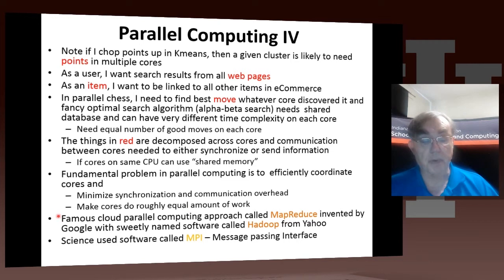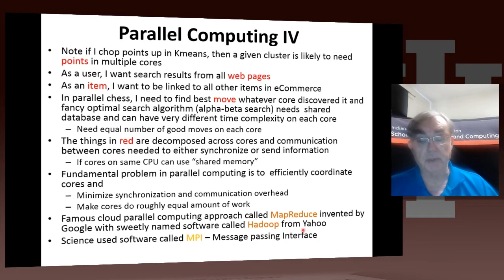So the fundamental problem in parallel computing is to chop up the problem into parts, minimize synchronization and communication overhead, and make cores do roughly equal amounts of work. Approaches for this include MapReduce, originally invented by Google, with associated software called Hadoop from Yahoo, which is open source under Apache. There is also the Message Passing Interface, which has similarities to MapReduce and is used in most scientific simulations.